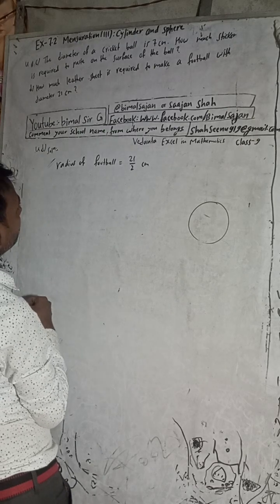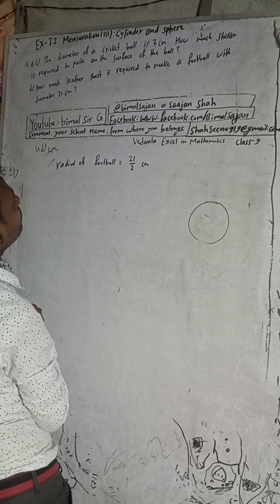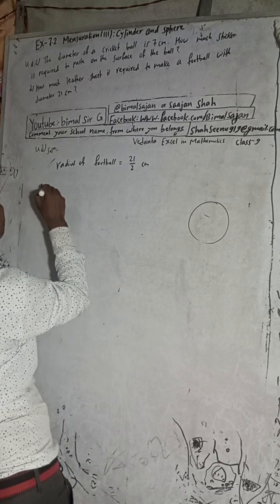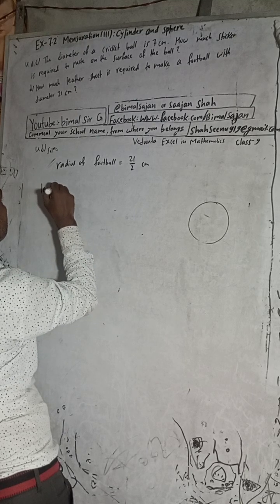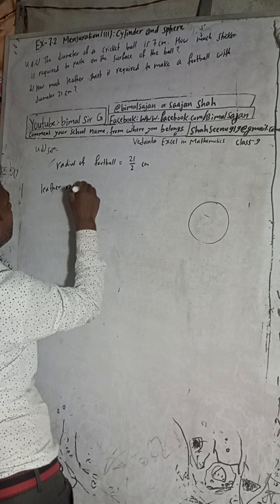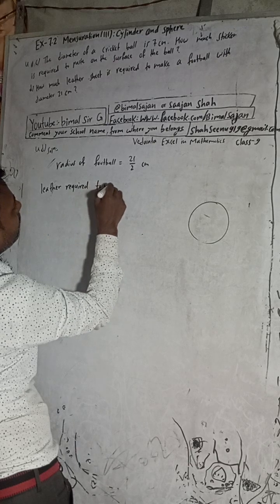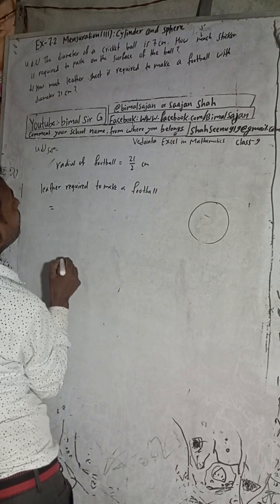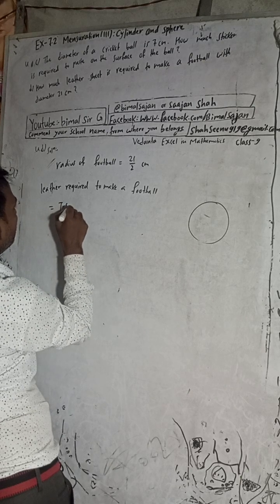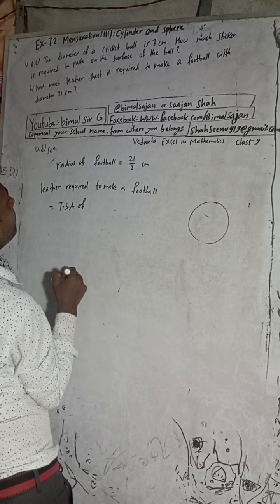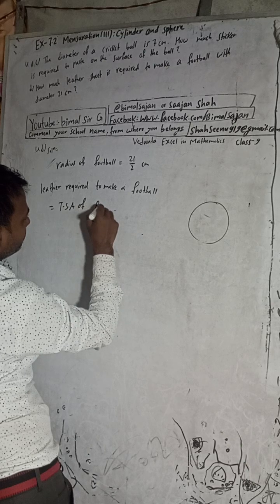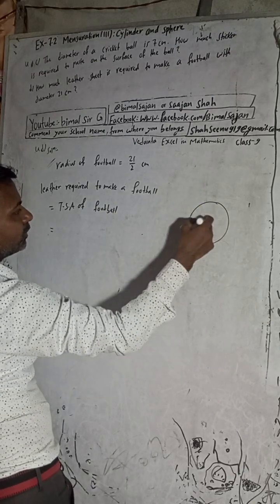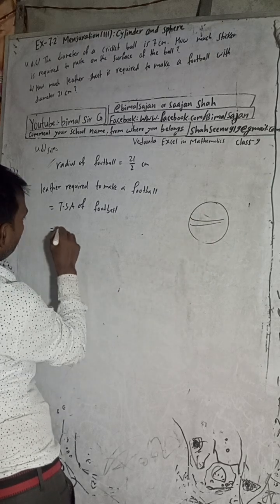The radius of the football is equal to 21 by 2. Now, the leather required to make a football is equal to the total surface area of the football. The football is spherical in shape, so the surface area of the football is 4πr².